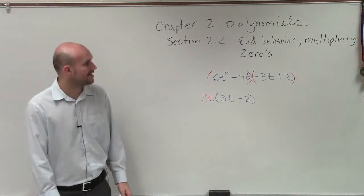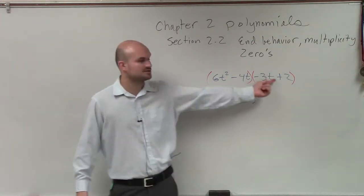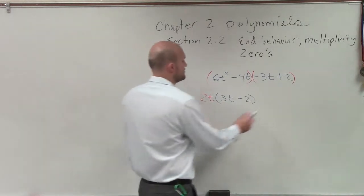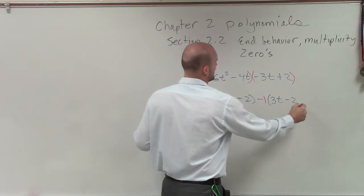And that's going to leave me with 3t minus 2. Then I look over here and I say, what can I factor out out of here? Well, we want this factor to be the same as that one. So to do that, I'm going to have to factor out a negative 1. And if I factor out a negative 1, I now have a 3t minus 2.